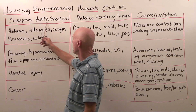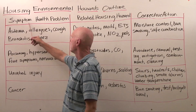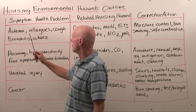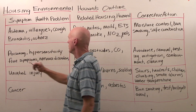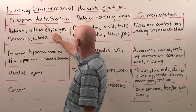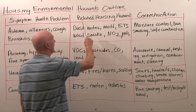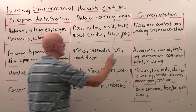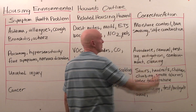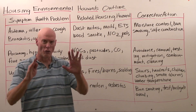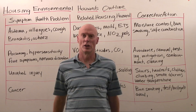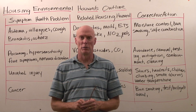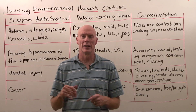We're going to start off with a column of symptoms and health problems, which are very common, and then relate those symptoms and health problems to housing hazards, proposing some corrective actions — all very general. We're just going to build a big outline that we can build on as we get more knowledgeable about these hazards.